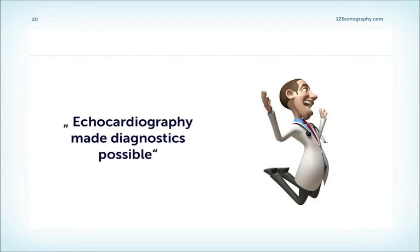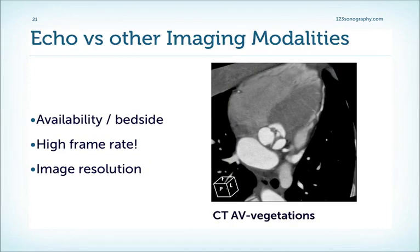Early diagnosis is the key to successful treatment of endocarditis. Other imaging modalities such as MRI or CT can also sometimes visualize vegetations, but they have disadvantages: they are not as available at the bedside as echo, their frame rates are not comparable — and we need high frame rates because vegetations often move very quickly — and the image resolution is also not comparable to that of echocardiography.